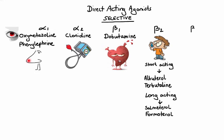Finally, we have beta-3 selective agonists, namely mirabegron, which stimulates beta-3 receptors on the surface of the detrusor muscle, leading to relief of symptoms of overactive bladder.